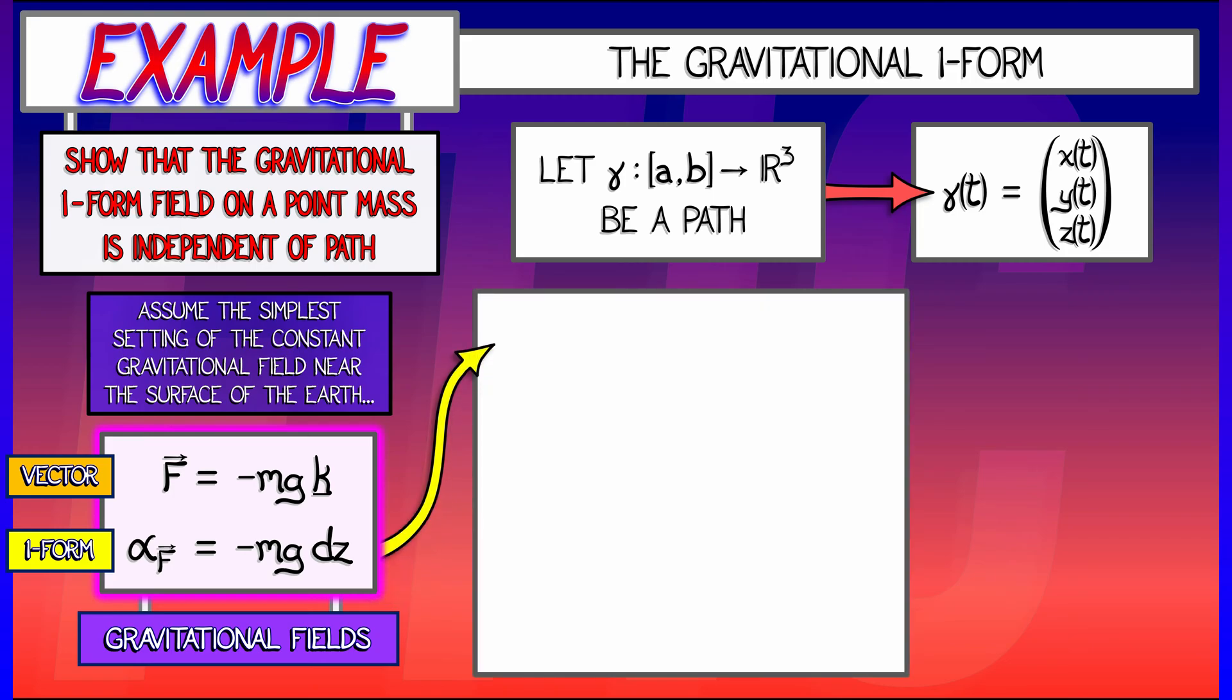Then, how do we integrate alpha sub f over gamma? Well, this is really simple. The integrand is minus mg dz. m and g are constants. dz looks at the derivative of gamma and pulls out the z component. So that means when I integrate this, I'm really taking the integral as t goes from a to b of minus mg times the derivative, dz dt, and then I'm integrating that with respect to t.